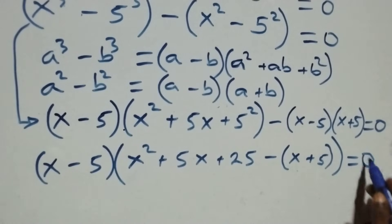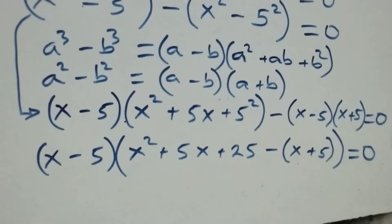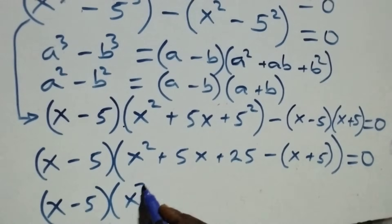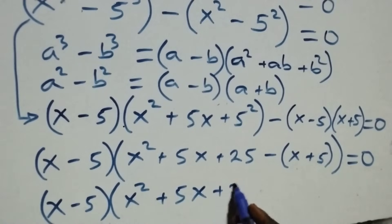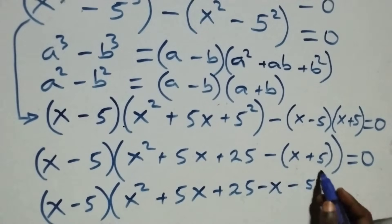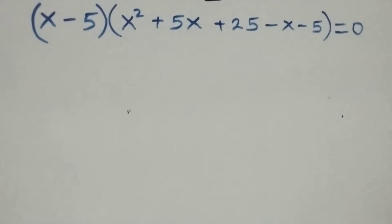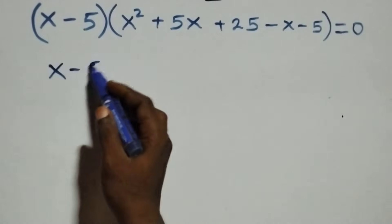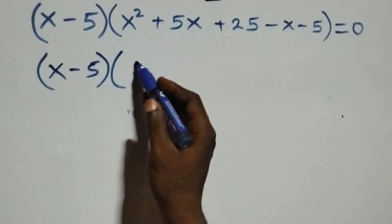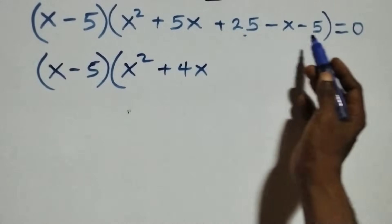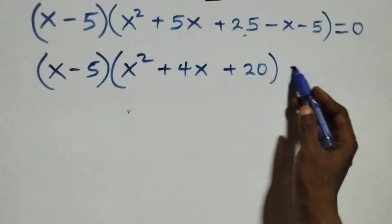Here x minus 5 is common; we factor it out and we have x minus 5, into brackets, then open bracket: we are left with x squared plus 5x plus 25, then minus, open bracket x plus 5. We bring this bracket together and we have x minus 5, into brackets, then open bracket x squared, and 5x minus x becomes plus 4x, and 25 minus 5 is plus 20, close bracket, equals to zero.